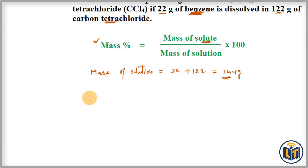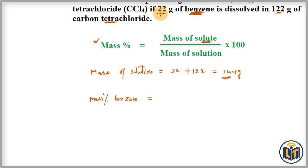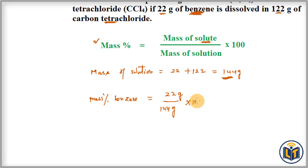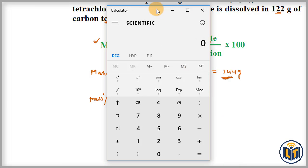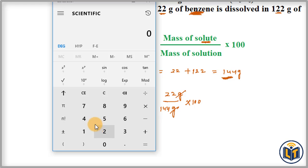We calculate the mass percentage of benzene (solute) first. Mass percentage of benzene = mass of solute / mass of solution × 100 = 22 g / 144 g × 100. The gram units cancel out.